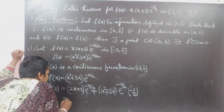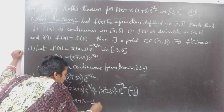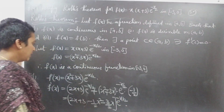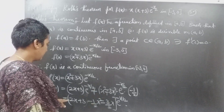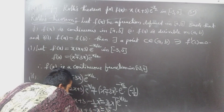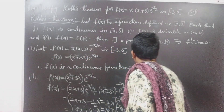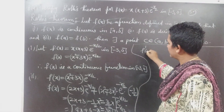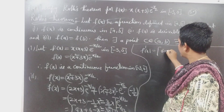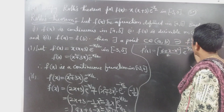Therefore, F'(X) equals (2X + 3) plus (-1/2)(X² + 3X) into e^(-X/2). Simplifying: this is equal to (4X + 6 - X² - 3X) divided by 2, into e^(-X/2). Then F'(X) is equal to (6 + X - X²) divided by 2, into e^(-X/2).